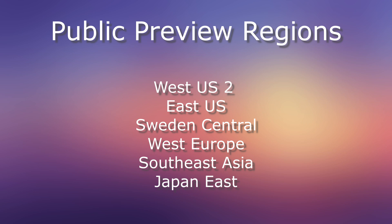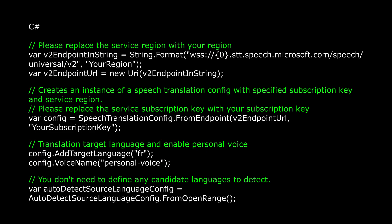The supported regions are West US 2, East US, Sweden Central, West Europe, Southeast Asia, and Japan East. To enable Live Interpreter, you can utilize the following sample code. For the first line of code, replace the service region with the region you've created your resource in. The second line creates an instance of a speech translation config with your subscription key and service region. The third line is where you add your translation target language and enable Personal Voice. And the fourth line shows that you don't need to define any candidate languages to detect, because it's set to auto-detect.